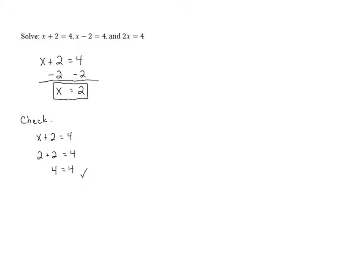If we had gone through the process of checking and got something that wasn't true, like 3 equals 4 or 8 equals 4, that would tell us we made a mistake and have to start over. Let's look at the next one: x minus 2 equals 4.